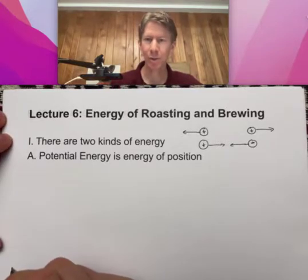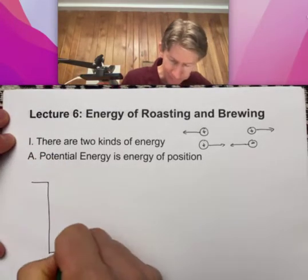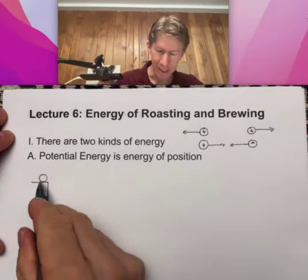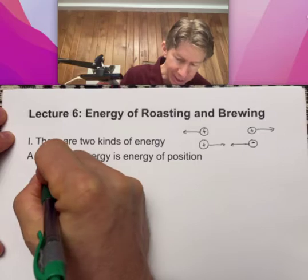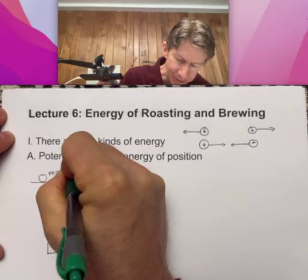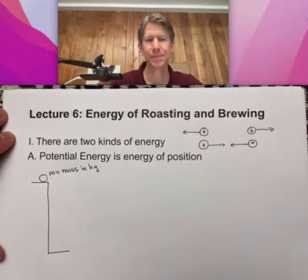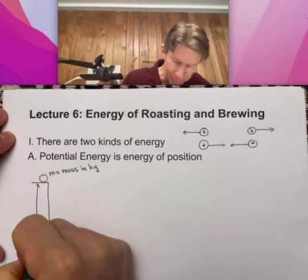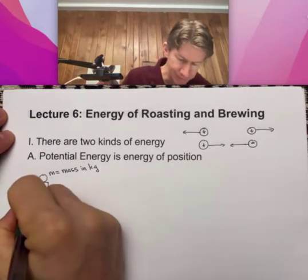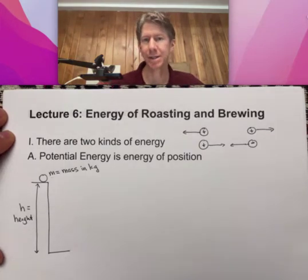Another two objects that have potential energy between them would be any ball and the earth, or anything and the earth. We're going to imagine a ball here at the top of a cliff or at the top of a table. This object has potential energy according to how much mass it has. We're going to use m for mass, m equals mass, and it will be important that the mass has units of kilograms. Then another factor that will be important is the height of that mass, height will be h, and it will be important for the height to be in units of meters.